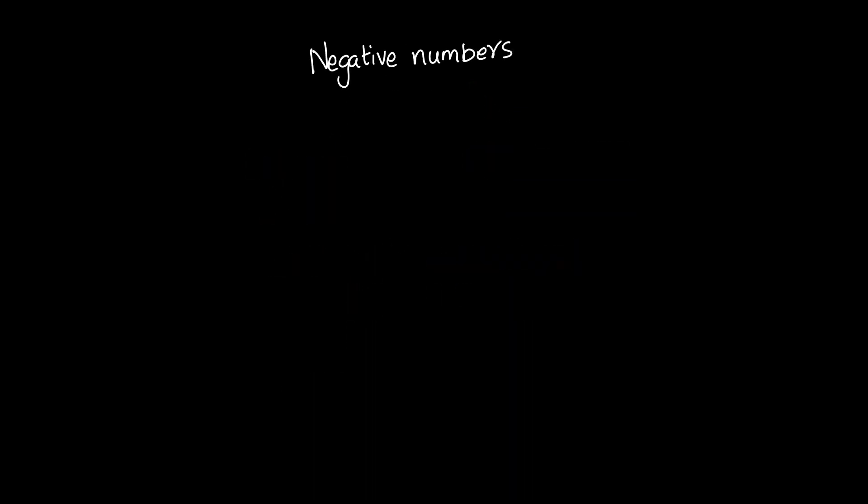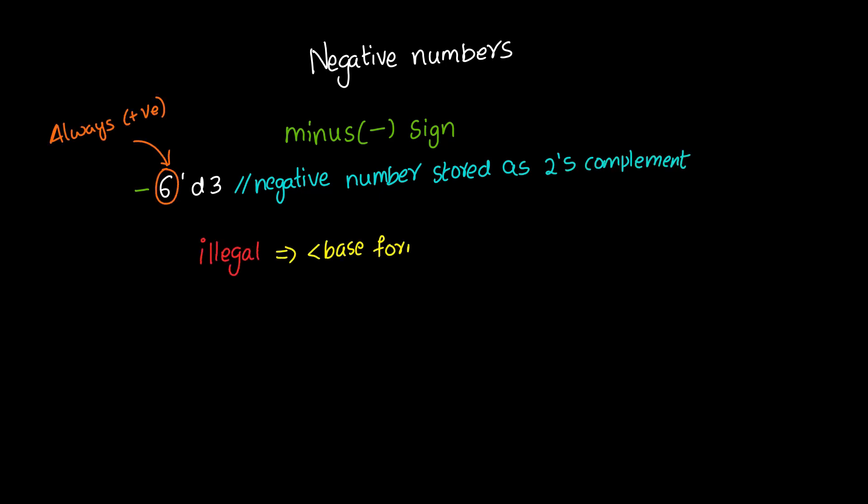Negative numbers. Negative numbers can be specified by putting a minus sign before the size for a constant number. Sized constants are always positive. It is illegal to have a minus sign between a base format and a number. An optional sign specifier can be added for signed arithmetic.